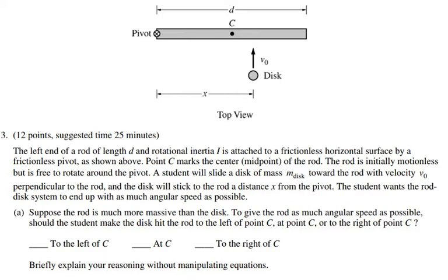The student wants the rod-disk system to end up with as much angular speed as possible. For Part A, they ask: suppose the rod is much more massive than the disk. To give the rod as much angular speed as possible, should the student make the disk hit the rod to the left of point C, at point C, or to the right of point C?